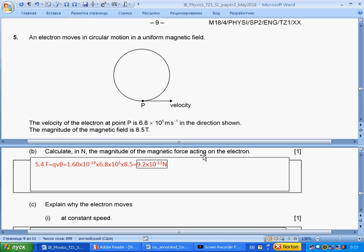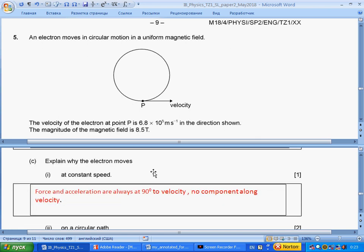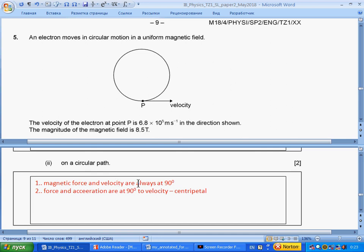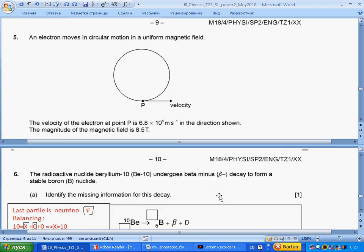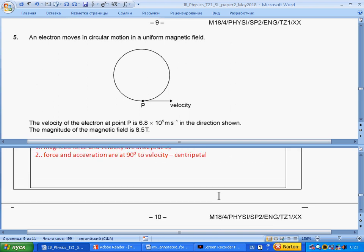Calculate in Newtons the magnitude of magnetic force acting on electron. Section 5.1: Force on moving charge. Two significant figures, answer we have. Explain why electron moves at constant speed. Force and acceleration are always at 90 degrees to velocity. So, no component along velocity. Speed doesn't change. On a circular path, magnetic force and velocity are always at 90 degrees. We have centripetal force and motion.